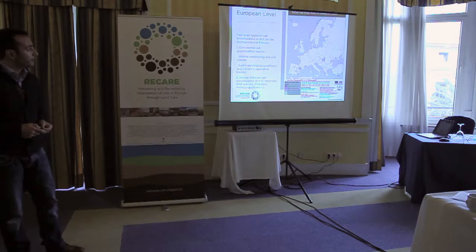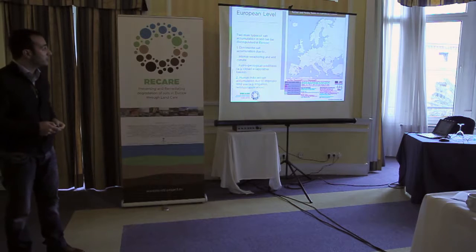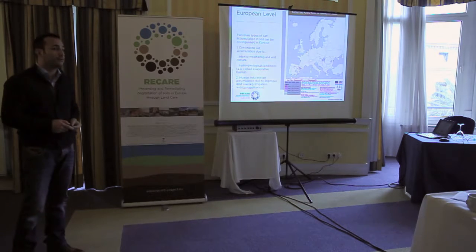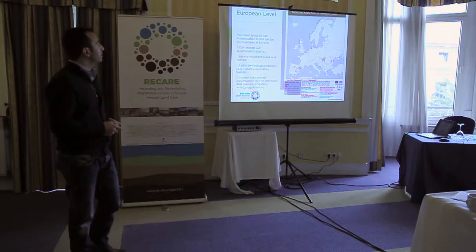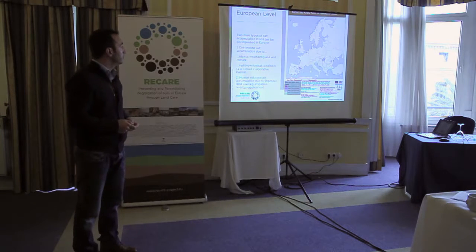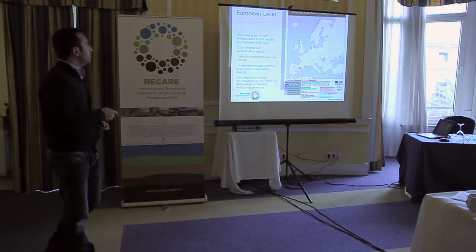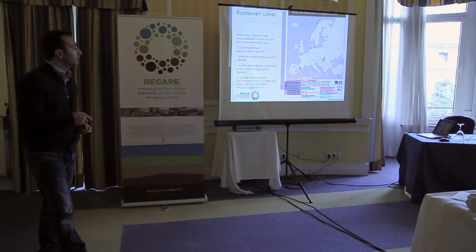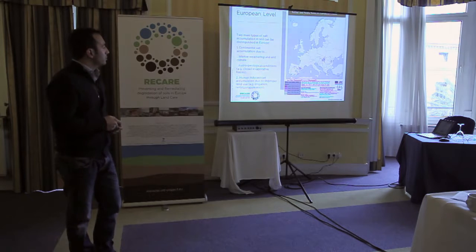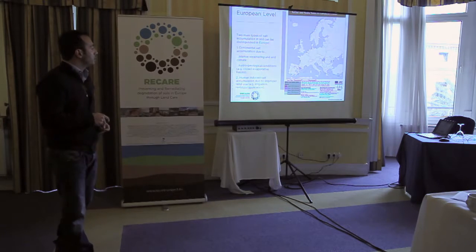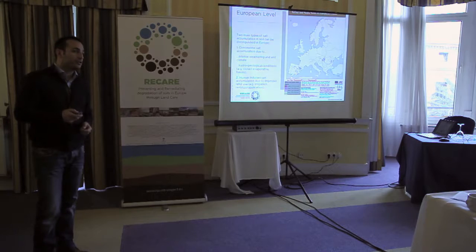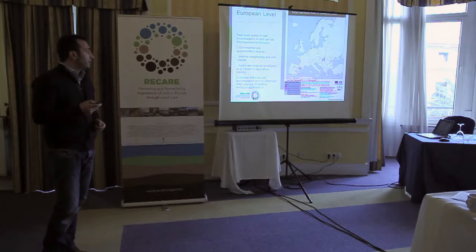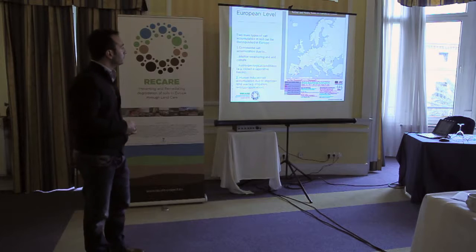This map from JRC shows that there are two main types of salt accumulation in Europe. One is due to geology — already-accumulated continental salt in the soils. The other is human-induced salt accumulation due to improper land management, such as over-pumping water and irrigating with salt water.